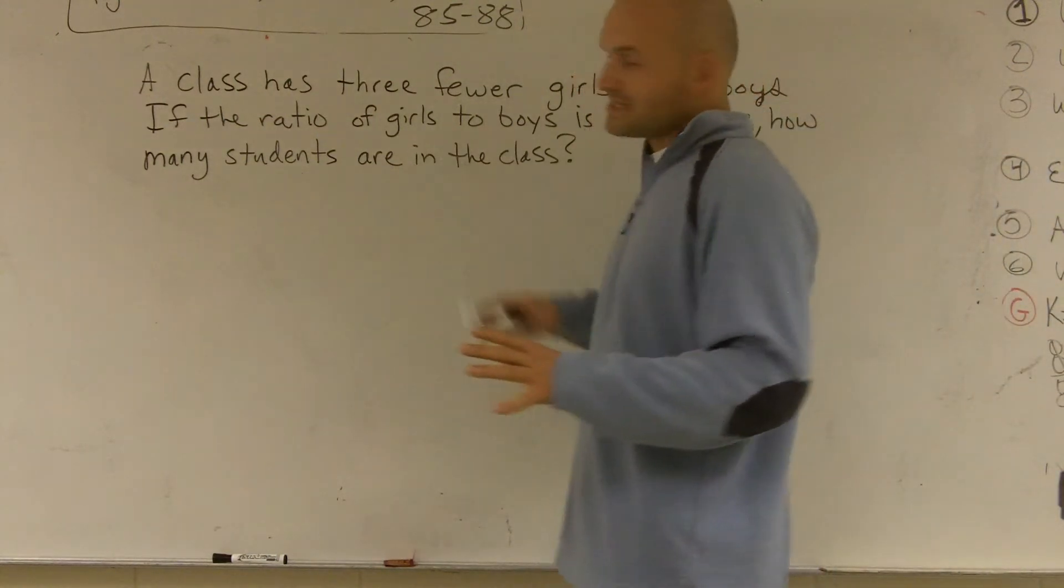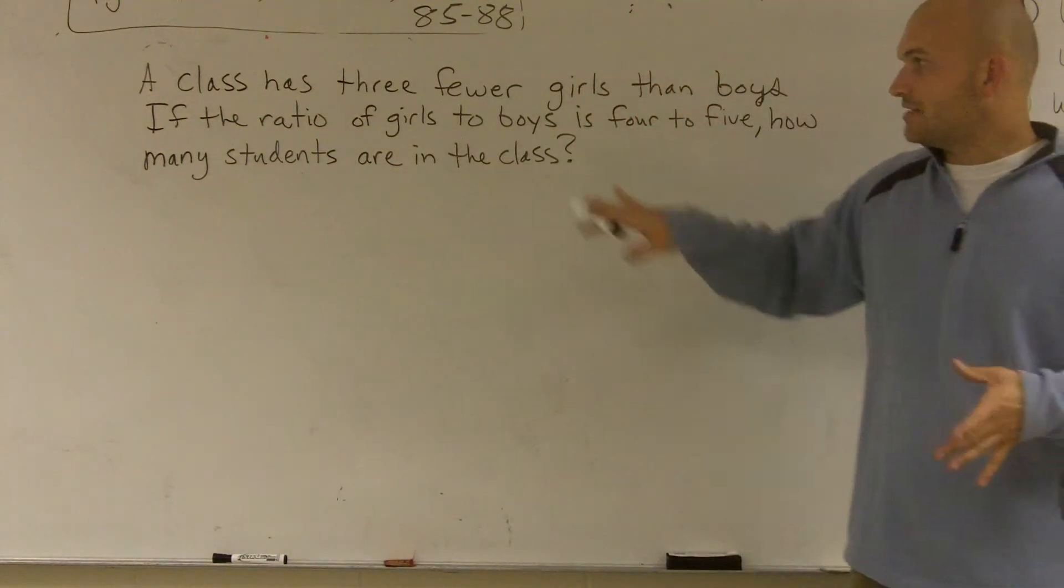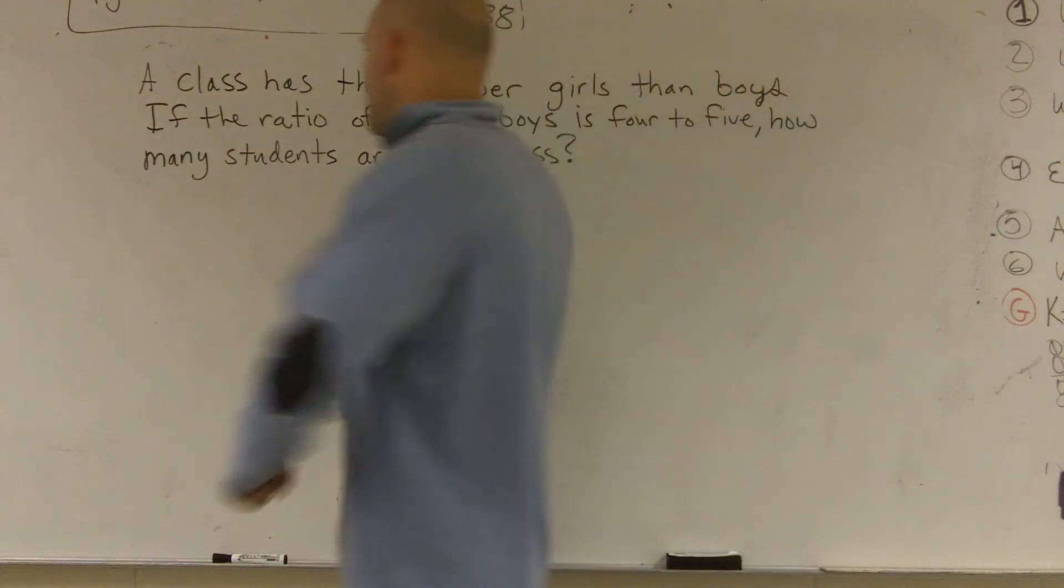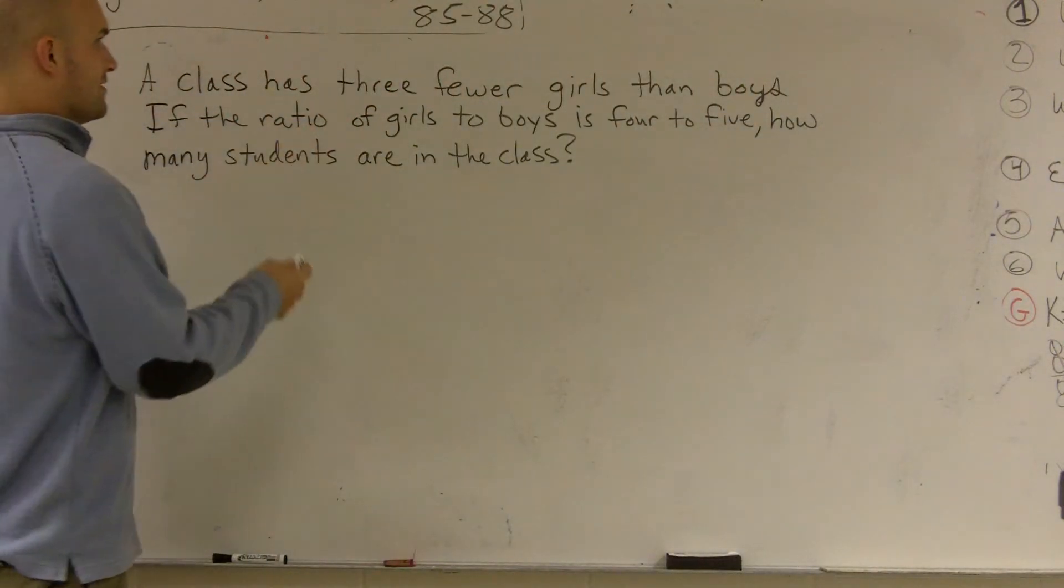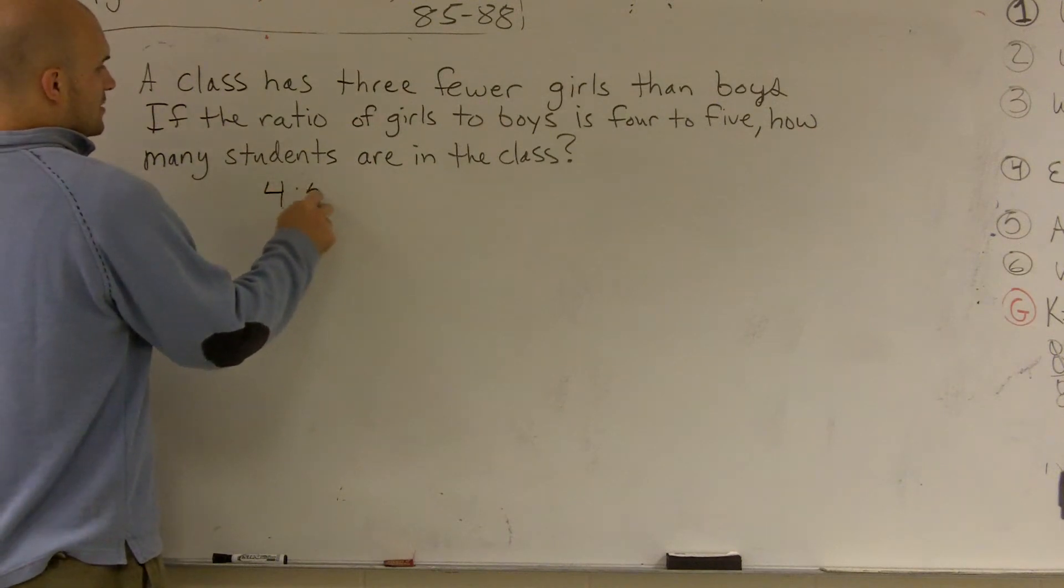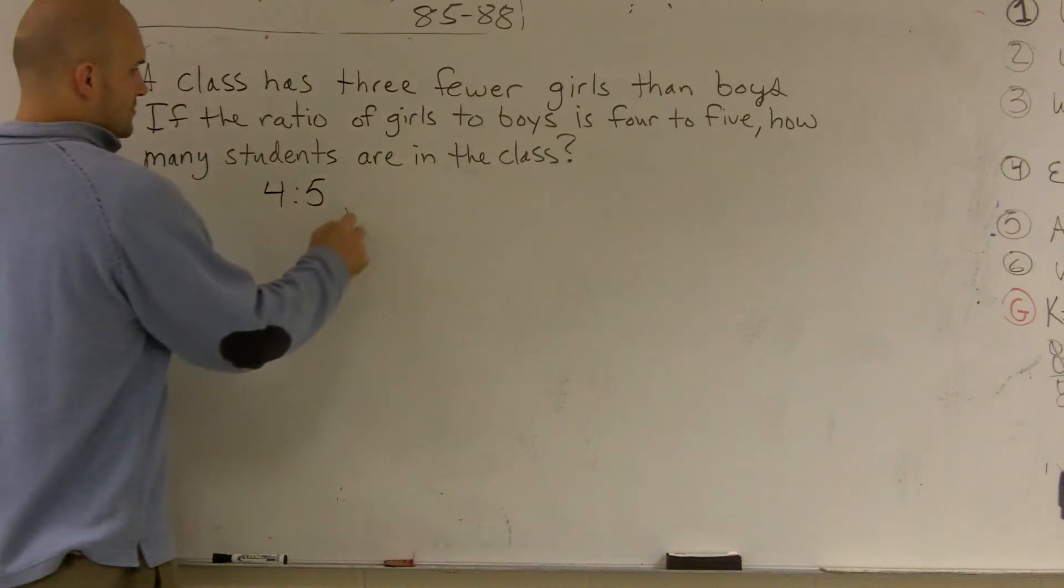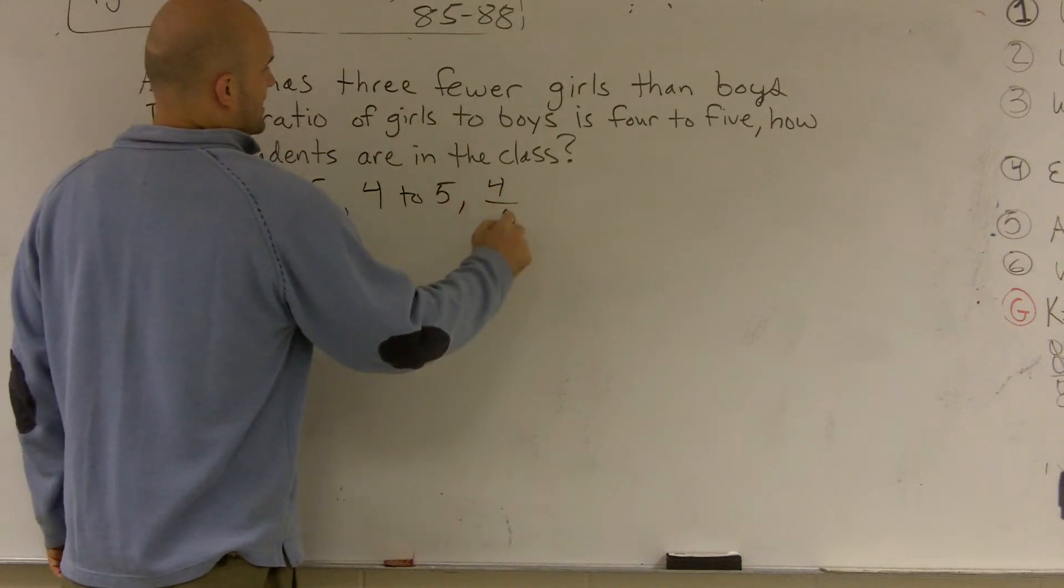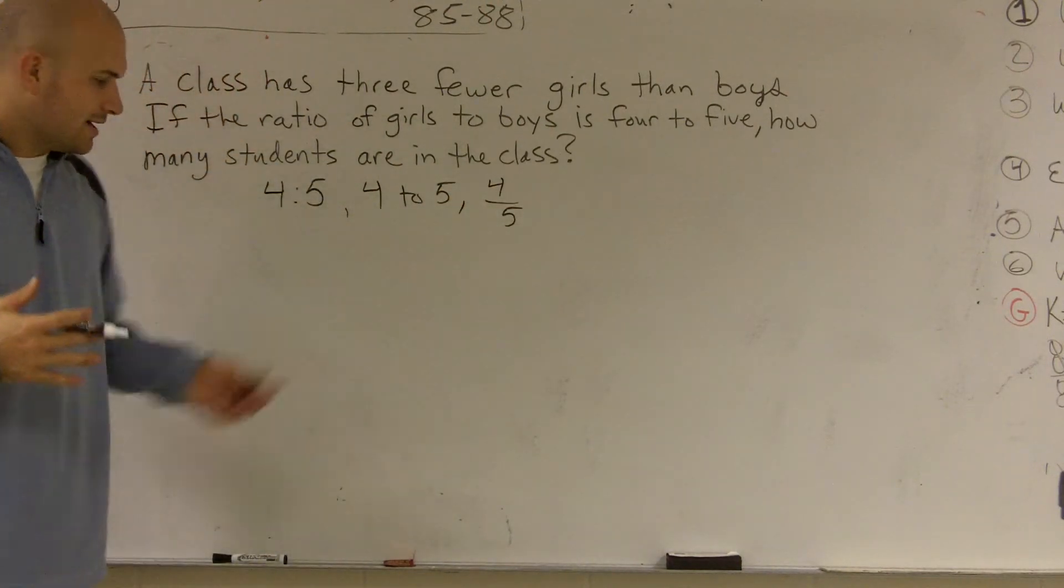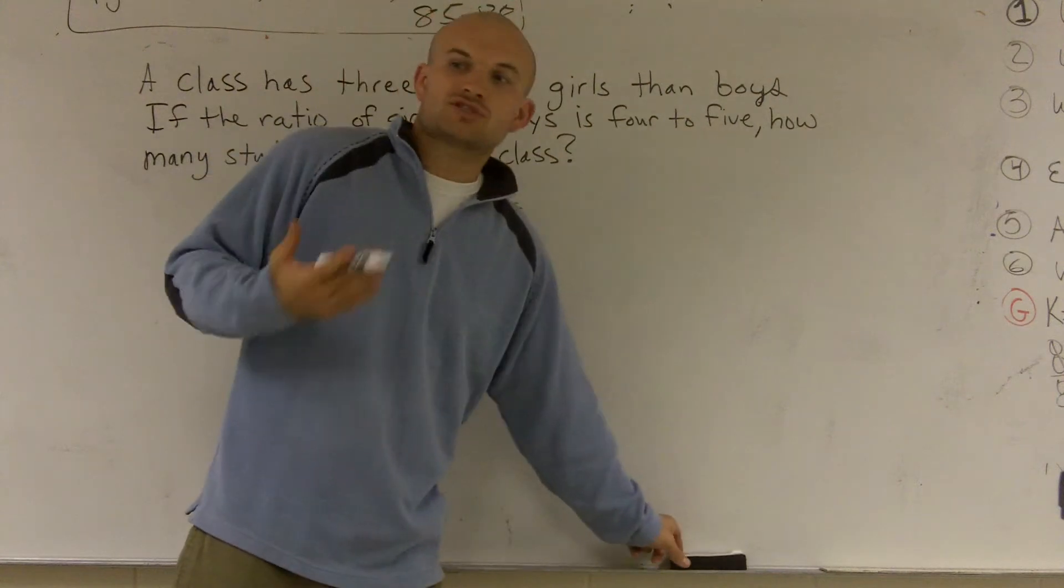Now, one thing that helps us solve the problem is they tell us it's a ratio. And remember, we can write a ratio between any two numbers. It says a ratio of 4 to 5. So remember, ratios come in like this. We could say 4 to 5, or we can write it as a fraction. Now, we're going to want to use the fractional form because we're going to be solving for it.